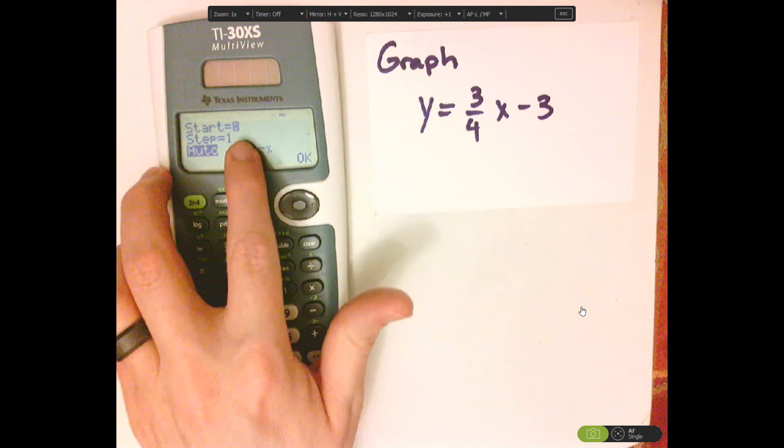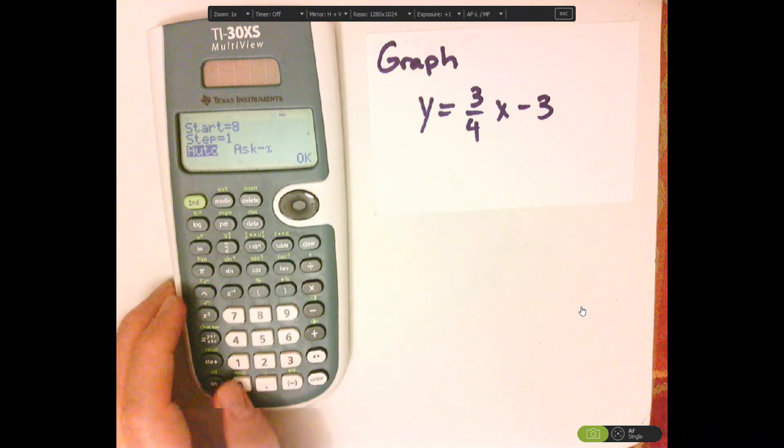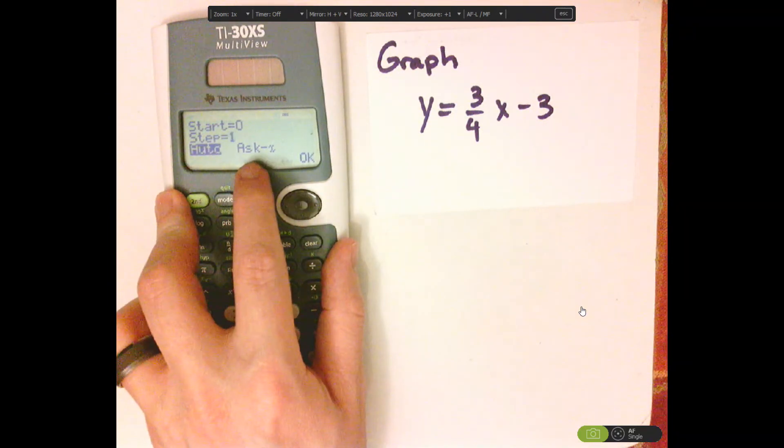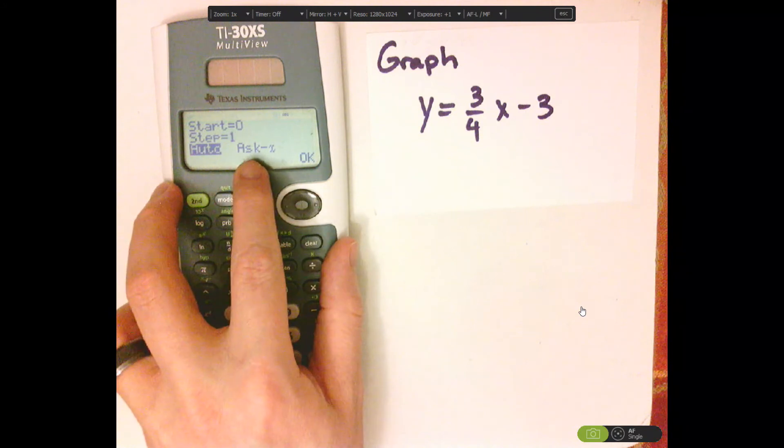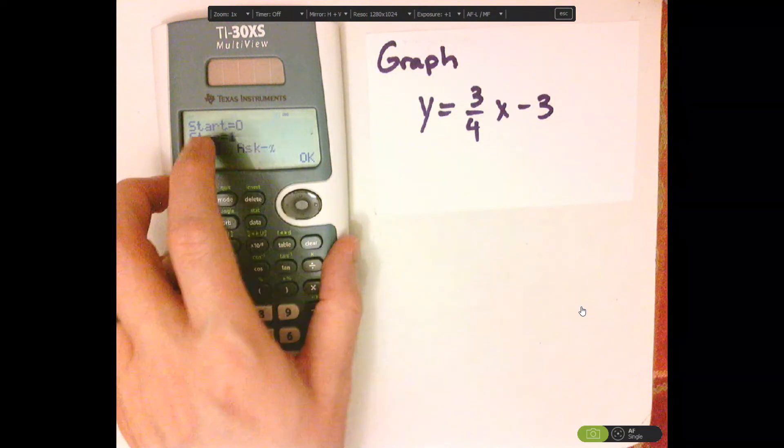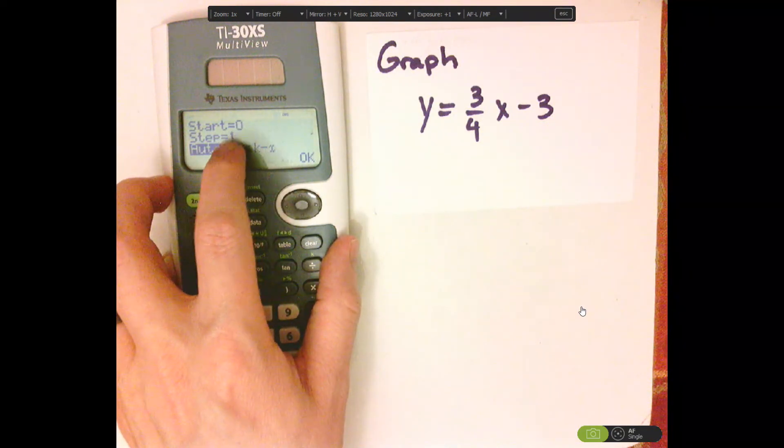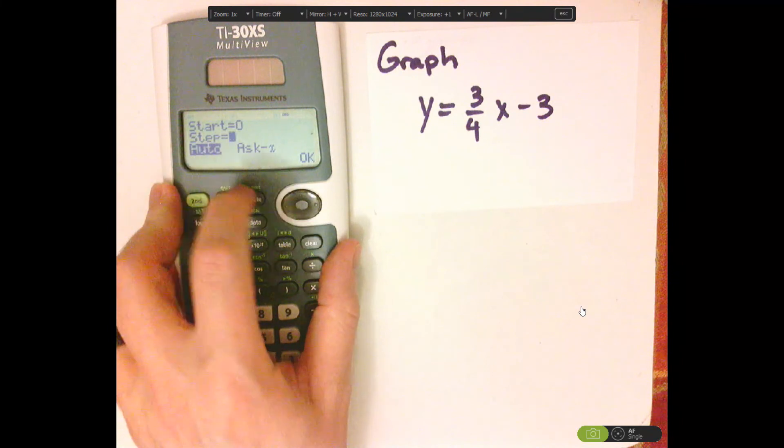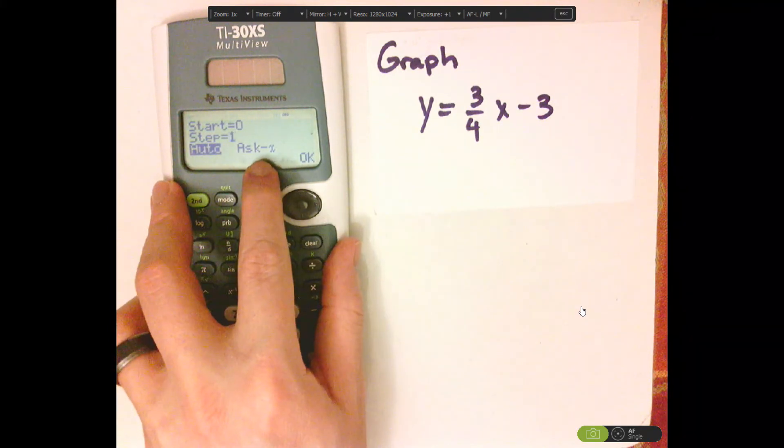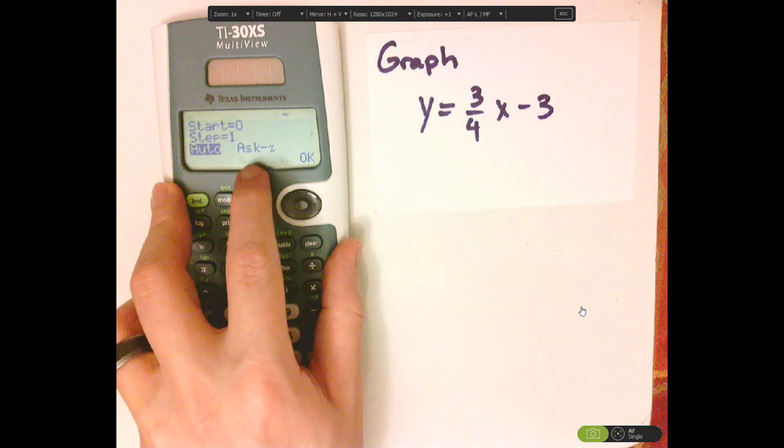Now I'm going to start at 0. Now I can either do auto or ask X. The auto does the start and does the step. So it's going to start at 0 and then take a step. It's going to increase every single time and then continue on doing that. If I did the ask X, then I can put in whatever X values that I wanted.